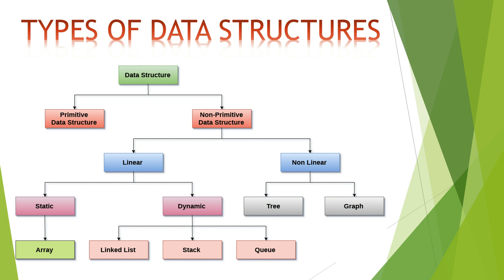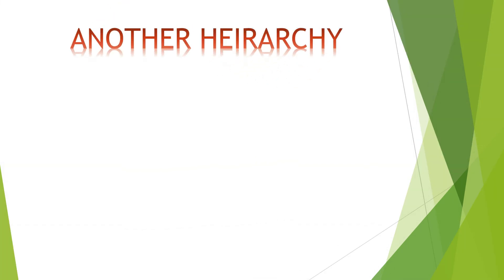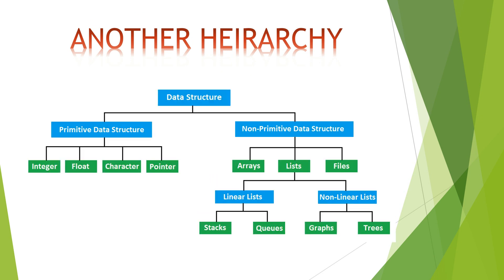Now we will see a different type of classification of data structures — another hierarchy. In this hierarchy, data structures are categorized in a different way. There is another non-primitive data structure which is added: files. A file is just a collection of records. The file data structure is primarily used for managing a large amount of data which is not in the primary storage of the system. Files help us to process, manage, access, and retrieve or work with such data easily. It has continuous linked indexed allocations.